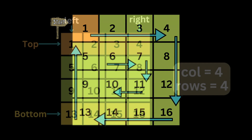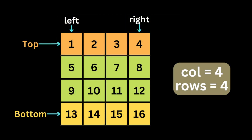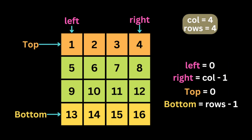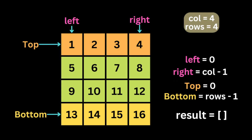We continue this until we have visited all the numbers inside the matrix. First we calculate how many rows and columns we have. We initialize a left and right variable that mark the leftmost and rightmost columns, and two more variables — top and bottom — that mark the topmost and bottommost rows. We also initialize an empty output array.